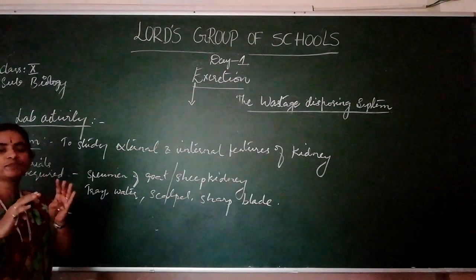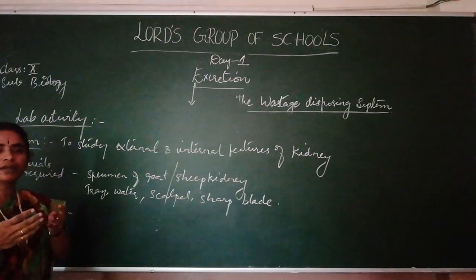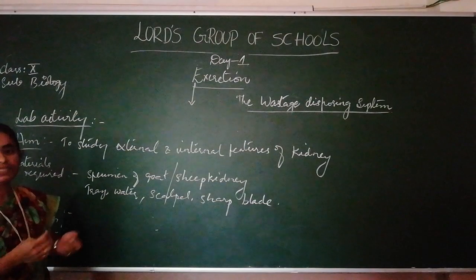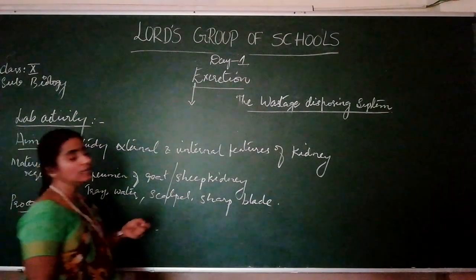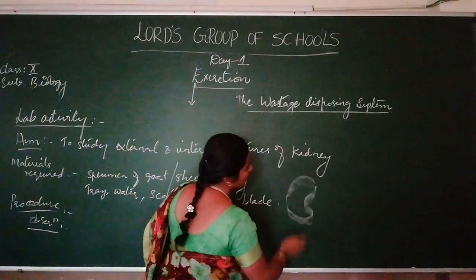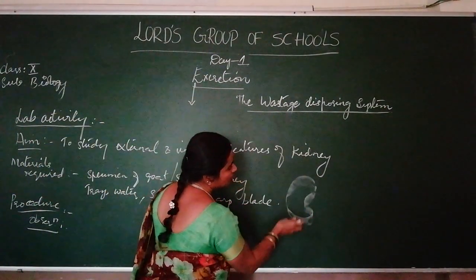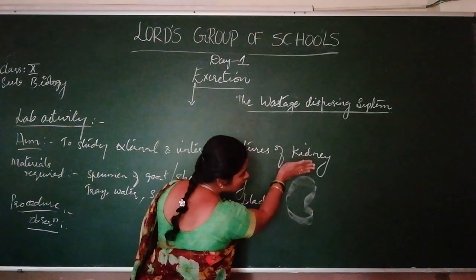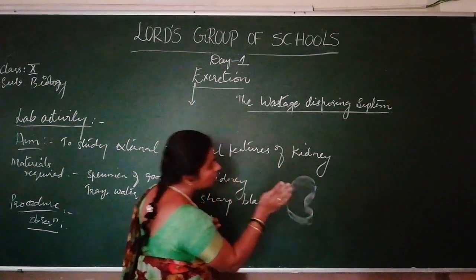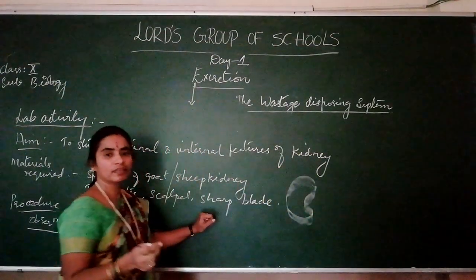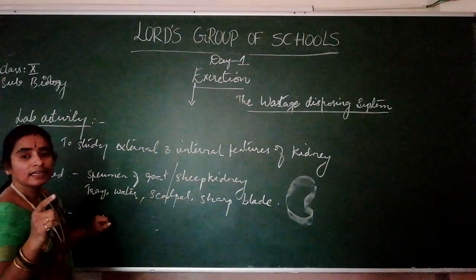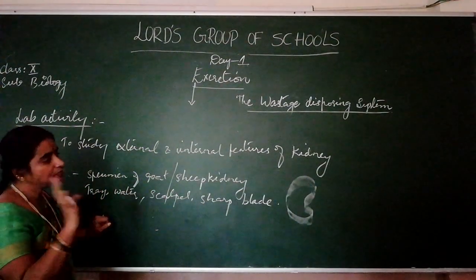Once you have noted the points regarding the external features of the kidney, we will proceed to the internal structure. You will cut a longitudinal section of the kidney, and then observe and note down the internal structure of the kidney.